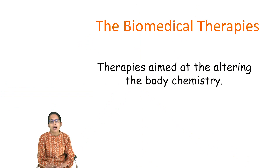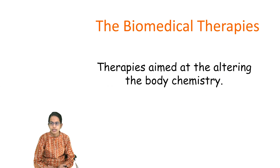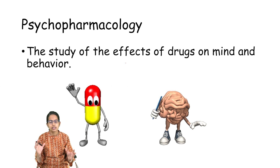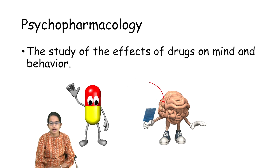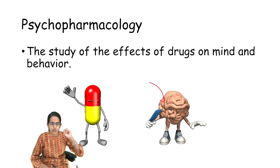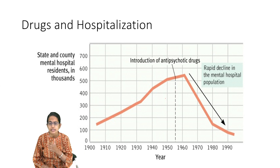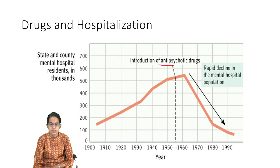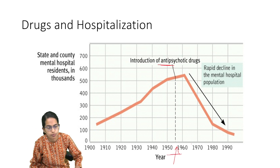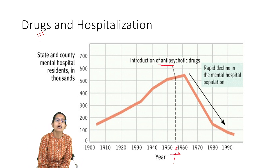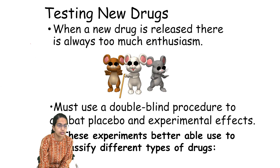In biomedical chemistry, biomedical therapies basically change the body chemistry through drugs. The drug changes the behavior of the mind — it affects your mind and simply polishes your mind, giving you new insight about things. With the use of drugs, the rate of hospitalization significantly declines in the mental patient population. Starting from the 1950s and 60s when antipsychotic drugs were introduced, you can see a steady decline in the mental hospital population, indicating that drugs have been one of the good ways to treat patients.